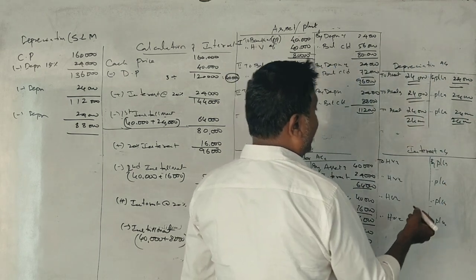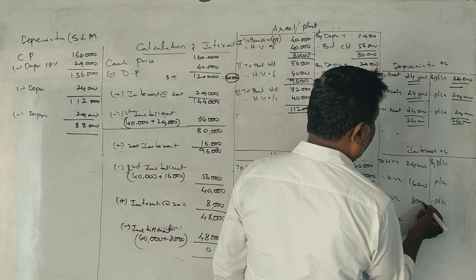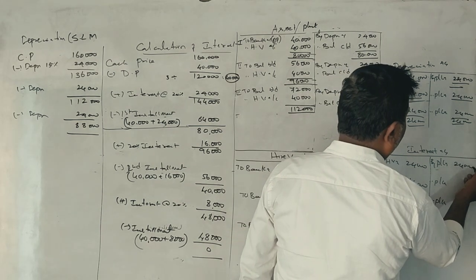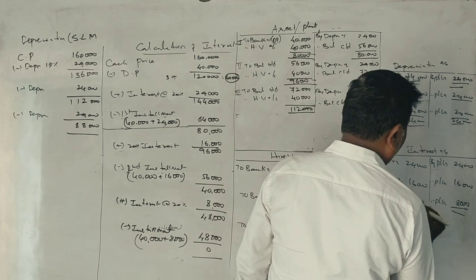The interest amounts are: first year 24,000, second year 19,200, third year 14,400. What is your total interest?